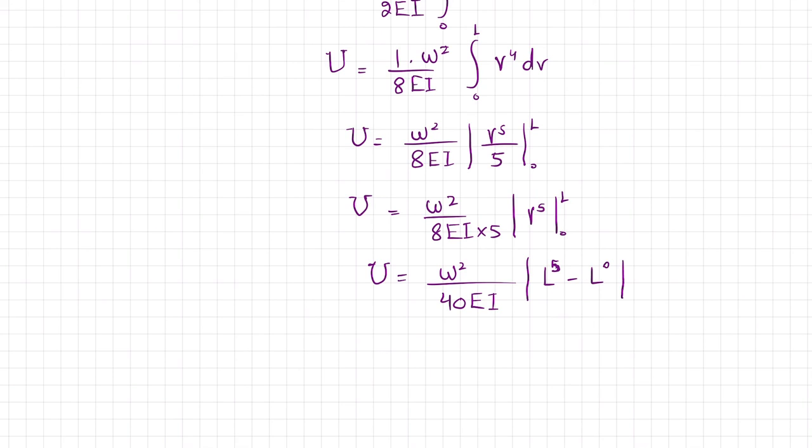This gives W squared times L to the fifth divided by 40EI. So U equals omega L to the fifth over 40EI. This is the total strain energy for the loading shown on the beam.